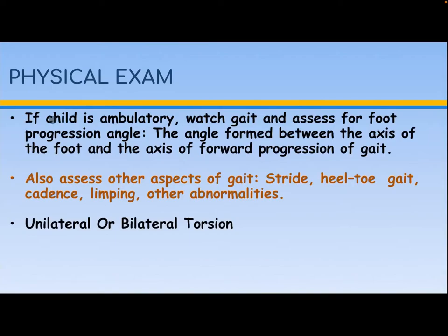Physical examination: if the child is ambulatory, watch their gait and assess the foot progression angle — the angle formed between the axis of the foot and the axis of forward progression of gait. Also assess other aspects of gait: stride, heel-toe gait, cadence, limping, other abnormalities, and whether torsion is unilateral or bilateral.